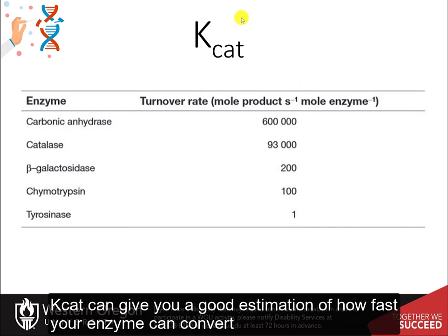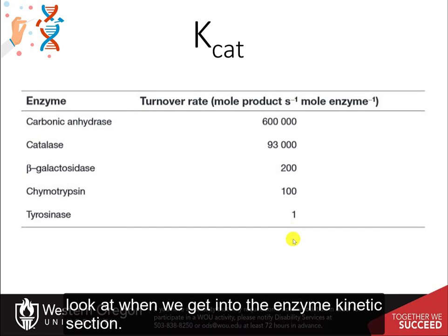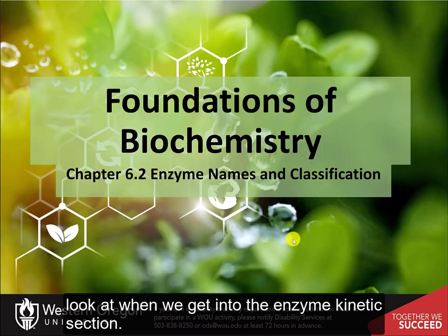Some enzymes have very high processivity. In the case of carbonic anhydrase, it can convert 600,000 molecules of product per second with one mole of enzyme, whereas tyrosinase is very inefficient in comparison, converting only one molecule. So kcat can give you a good estimation of how fast your enzyme can convert substrate into product, and it will be an important component as we get into the enzyme kinetics section.